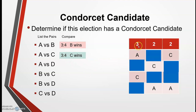Moving on to A versus C: A wins column one because A is ranked above C in column one, so A gets three votes. C wins columns two and three because in each of those columns, C is ranked above A. They don't have to be ranked in first place — they just have to be ranked higher than the other candidate. So C wins the comparison between A and C because C gets four votes and A gets only three.